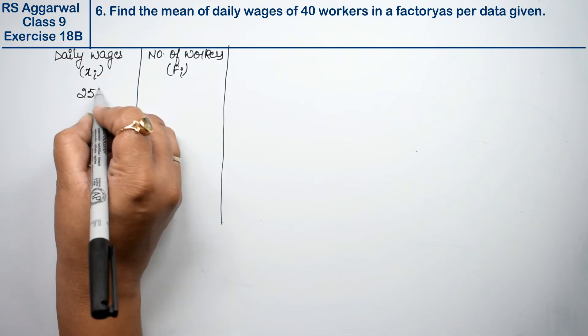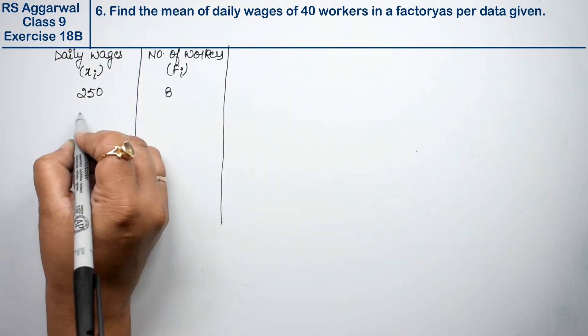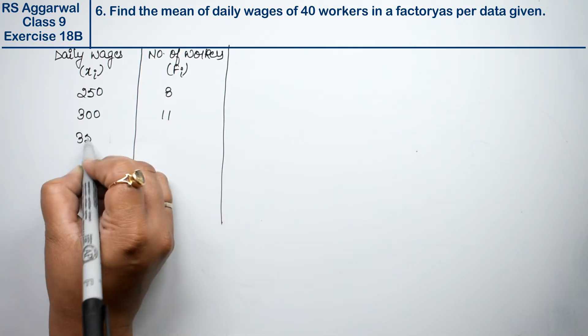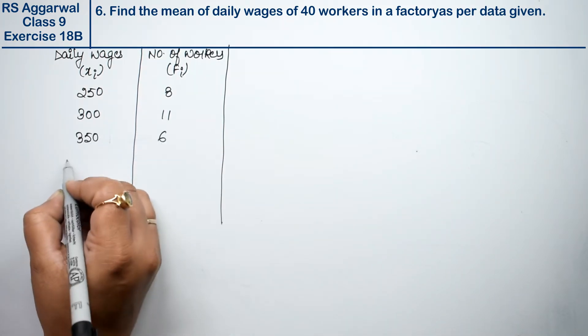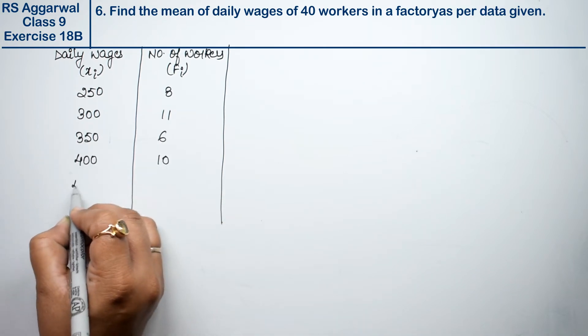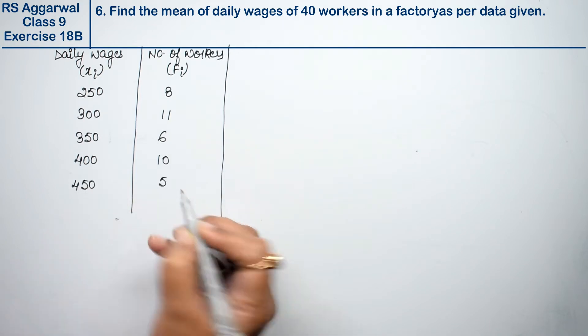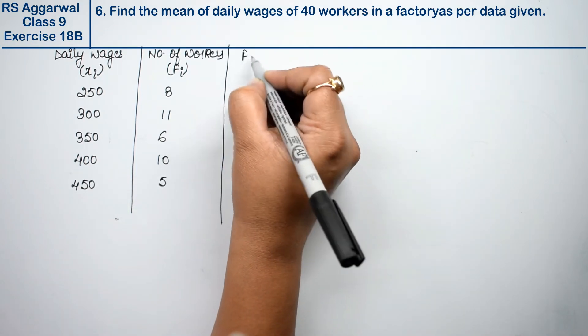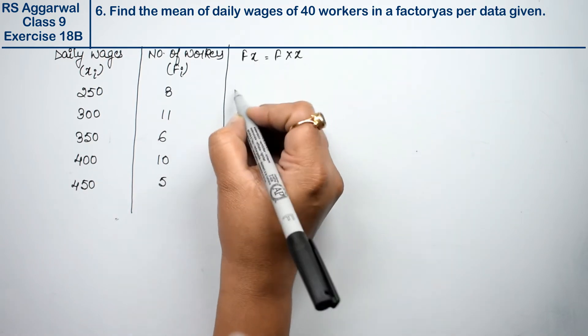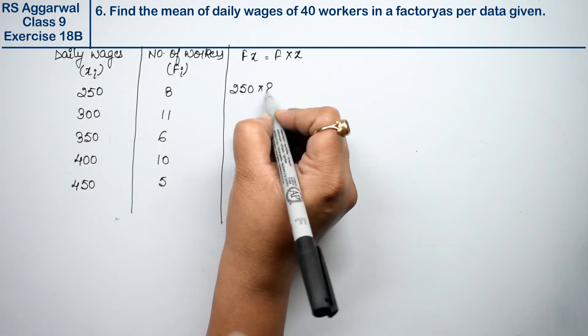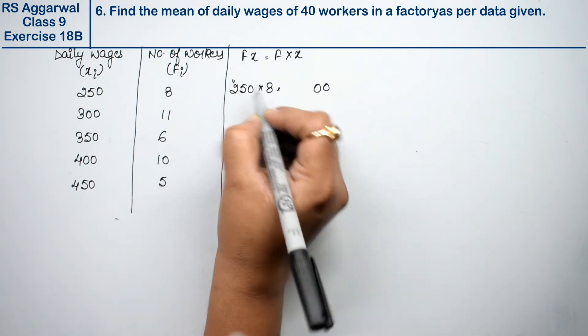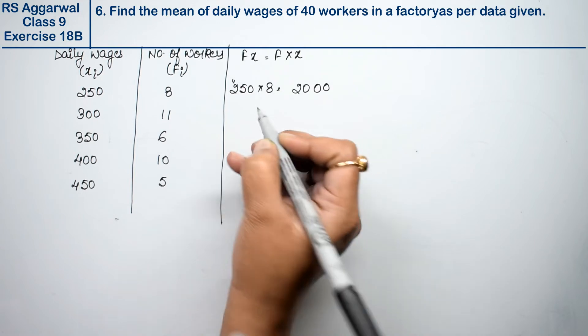Daily wages: 8 workers, 300; 11 workers, 350; 6 workers, 400; 10 workers, 450; 5 workers, right? So what do we need? fx. How do we get it? f multiplied by x. 250 times 8: 8 times 5 is 40, carry 4, 8 times 2 is 16 plus 4 is 20, right?